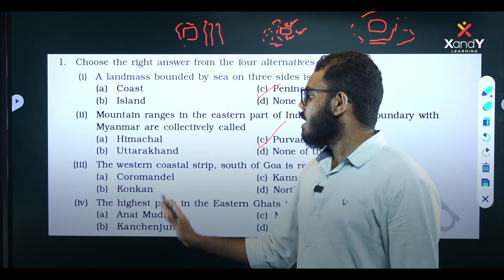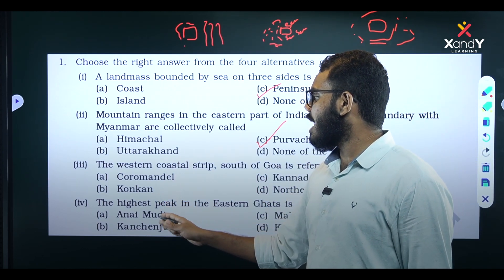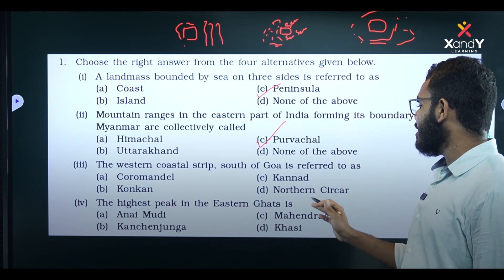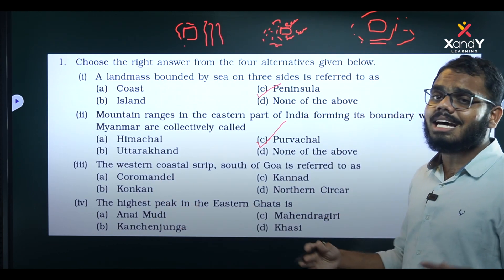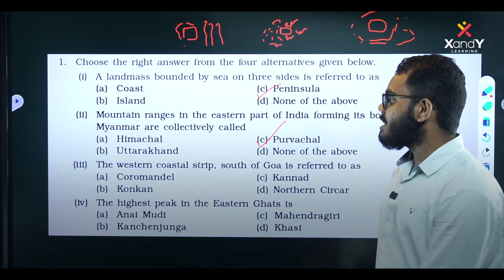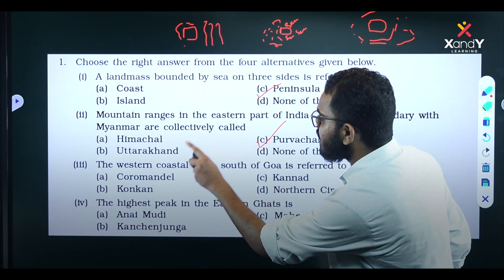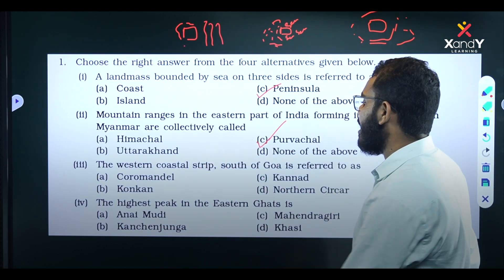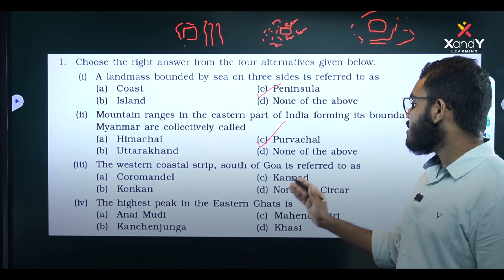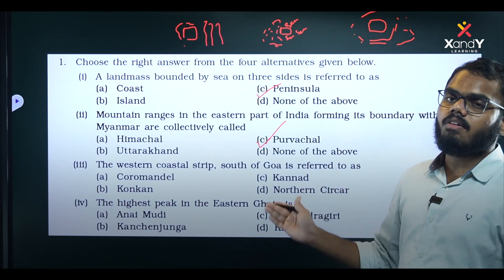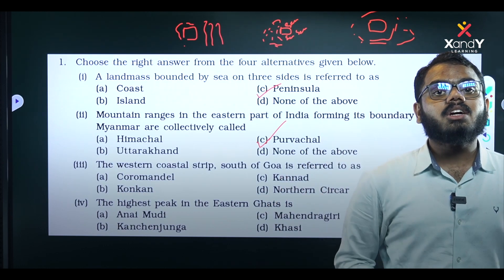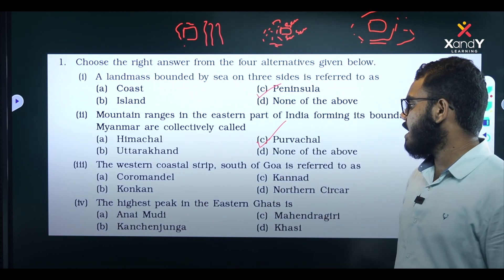This is Coromandel — Option A. Option B — Konkan. Option C — Purwajal. Option D — Northern Sircar. That is correct. The western coastal strip south of Goa — the right answer is Option C, Konkan.